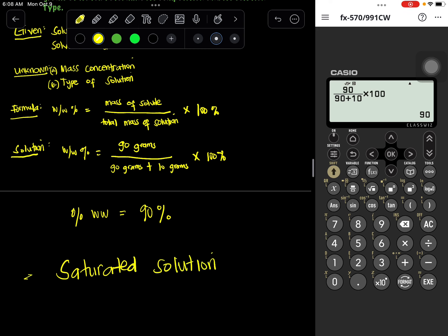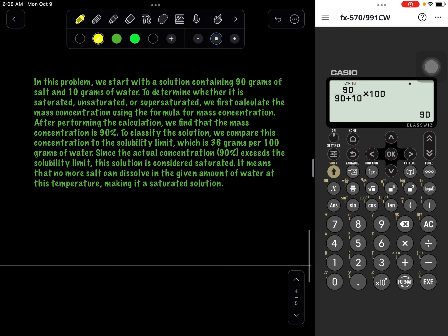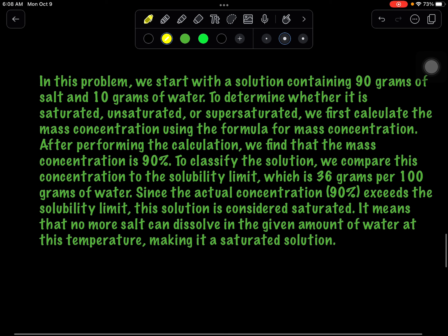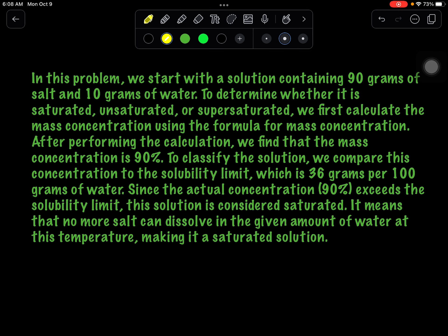Why does it become a saturated solution? In this problem, we start with a solution of 90 grams of salt and 10 grams of water. To determine whether it is unsaturated, saturated, or supersaturated, we first calculate the mass concentration using the formula. After performing the calculation, we find that the mass concentration is 90 percent. To classify the solution, we compare this concentration to the solubility limit, which is 36 grams per 100 grams of water. Since the actual concentration is 90 percent and exceeds the solubility limit, this solution is considered saturated — meaning no more salt can dissolve in the given amount of water at this temperature.